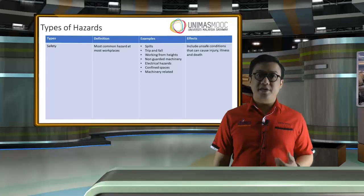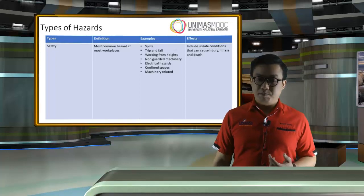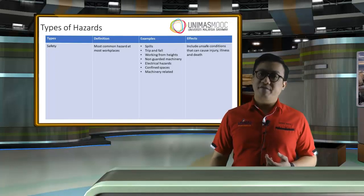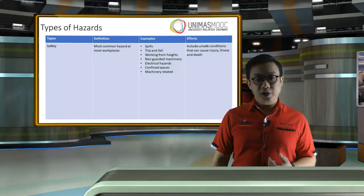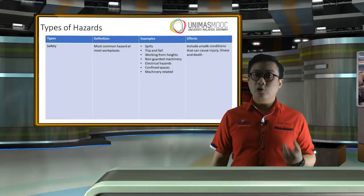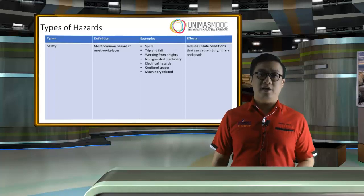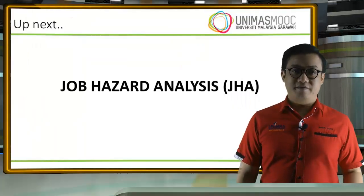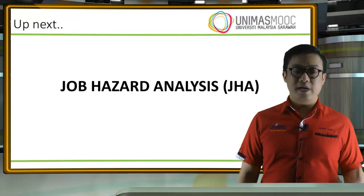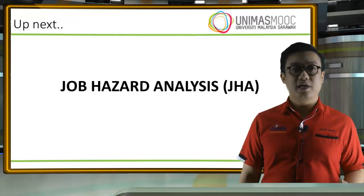Finally, we have safety hazards, which is the most common hazard at most workplaces. Examples include spills, trips and falls, working from heights, non-guarded machinery, electrical hazards, confined spaces, machinery-related hazards, and so on. It includes unsafe conditions that can cause injury, illness, and death. That's it for this introduction and overview unit. Next up, we will have the subunit, which is the Job Hazard Analysis, JHA. See you next time.